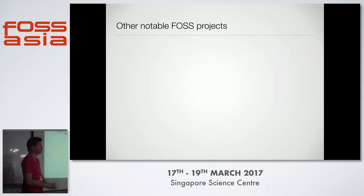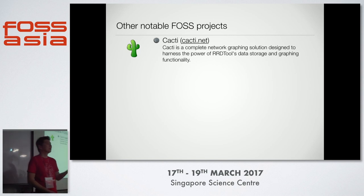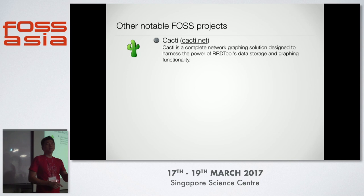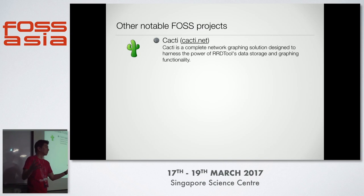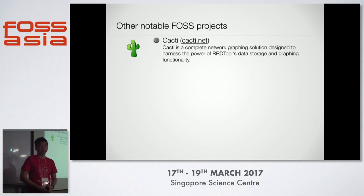Other notable projects worth mentioning: CACTI is very simple — it's all about counters. It has a poller that can pull from any device with an SNMP interface, retrieve counter values over time, and store them in an RRD (round-robin database). The web interface then gives you value-over-time graphs where you can zoom in or out depending on the granularity set in the RRD database.